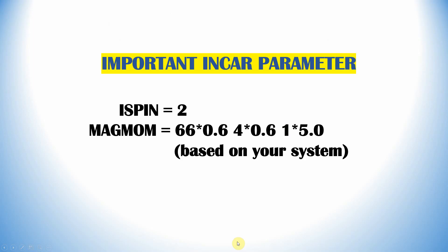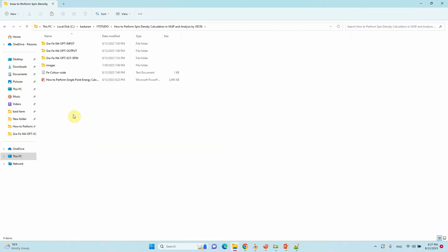The important INCAR parameters for spin density calculation: you need to apply ISPIN=2 and the MAGMOM tag. This system contains 66 carbon atoms, 4 nitrogen atoms, and 1 Fe atom. I mentioned the number of spin electrons for Fe as 5, and for nitrogen and carbon I gave 0.6.